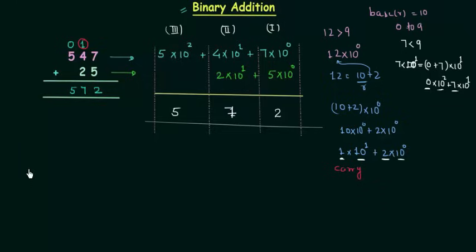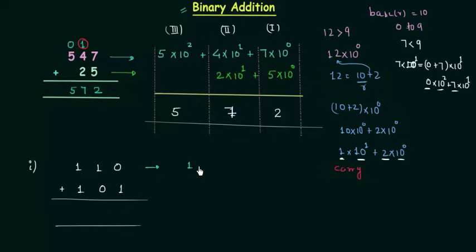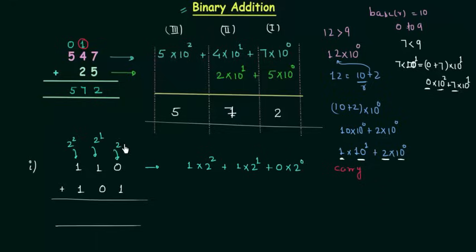Now we will move to binary addition. The first binary number is 110 and the second binary number is 101, and we have to add them. I will again include the weights of each position. So we have 1 multiplied by 2 raised to power 2, plus 1 multiplied by 2 raised to power 1, plus 0 multiplied by 2 raised to power 0. For 101: 1 multiplied by 2 raised to power 2, plus 0 multiplied by 2 raised to power 1, plus 1 multiplied by 2 raised to power 0.